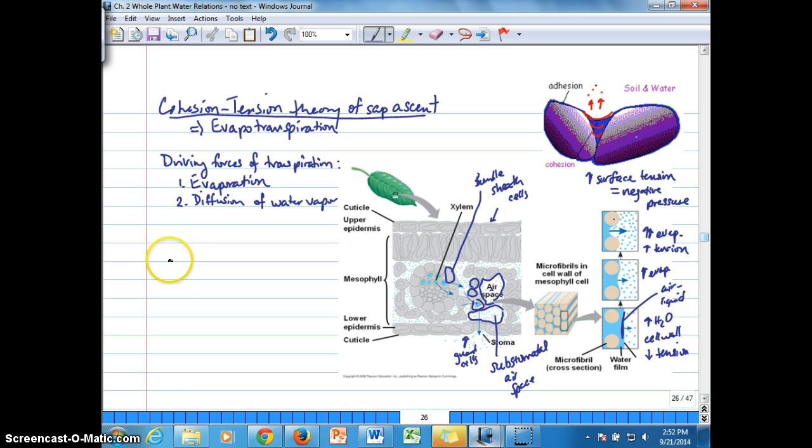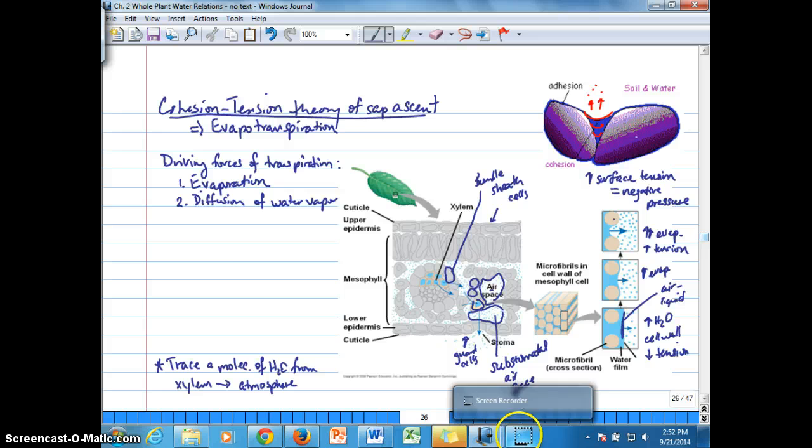You want to make sure that you can trace a molecule of water from a vessel element in xylem to the atmosphere. So if we were to list a series of structures here in order, you should be able to put them in order. Now, before we go on to see how water moves up the water column to replace the water,